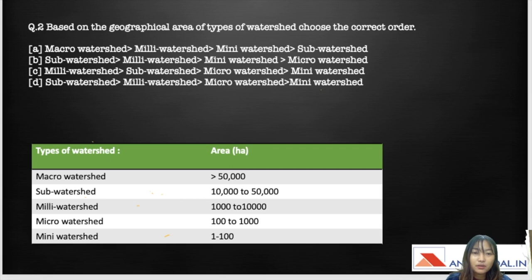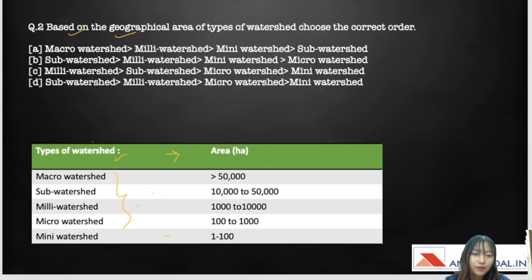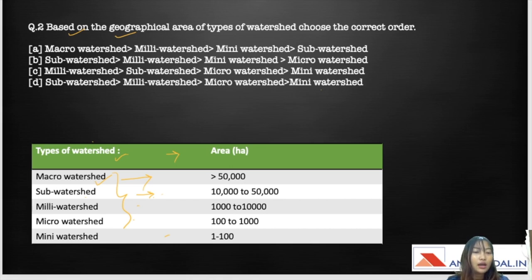The second question says: based on the geographical area of types of watershed, choose the correct order. The types of watershed and their sizes are: macro watershed covers more than 50,000 hectares; sub watershed covers 10,000 to 50,000 hectares; milli watershed covers 1,000 to 10,000 hectares; micro watershed covers 100 to 1,000 hectares; and mini watershed covers 1 to 100 hectares. These are in decreasing order.